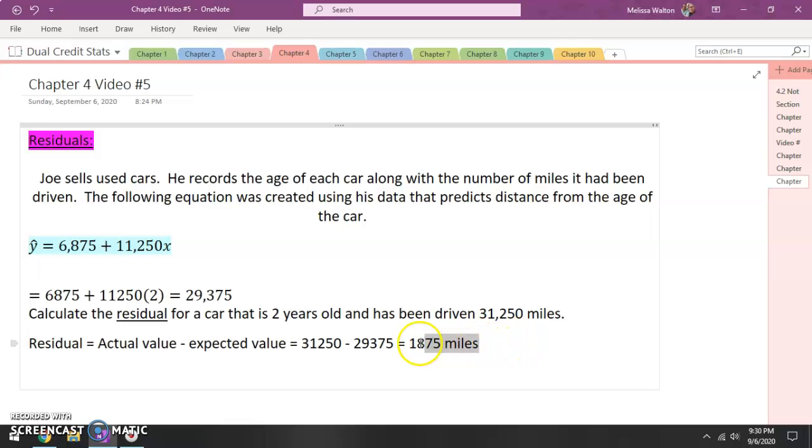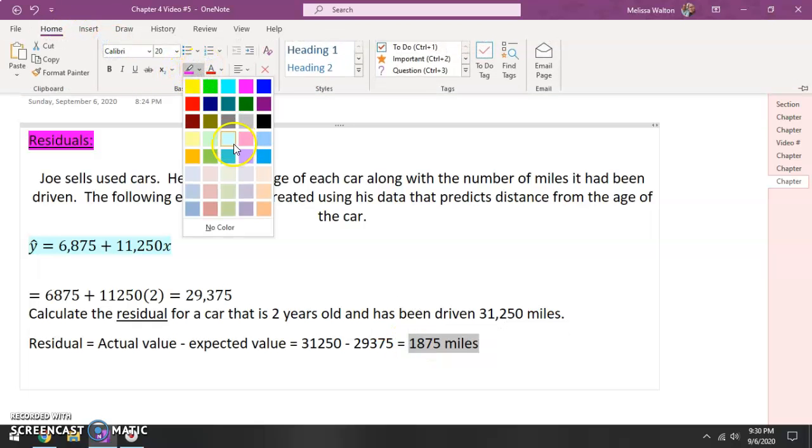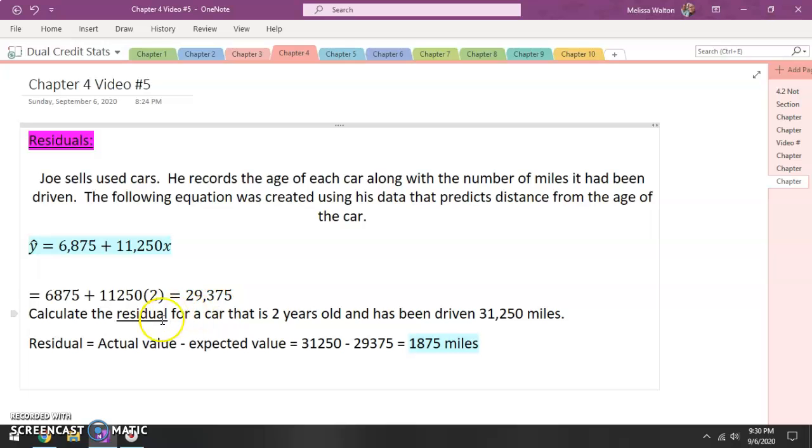So what the heck did we just do? What did we do? All right, so let's go ahead and backtrack real quick here. So the residual of something is your actual value minus your expected value, your actual value minus your expected. This car actually had 31,250, but it was only expected to have 29,375. So that means that this car had more miles than anticipated.